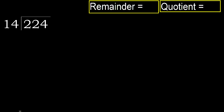224 divided by 14. 2 is less, therefore next. 22 is not less, therefore with 22 — 14 multiplied by which number is nearest to 22?